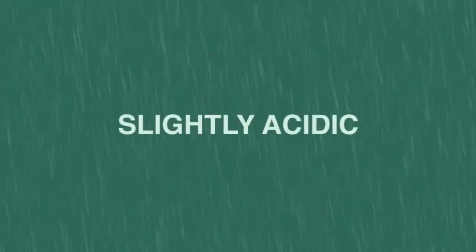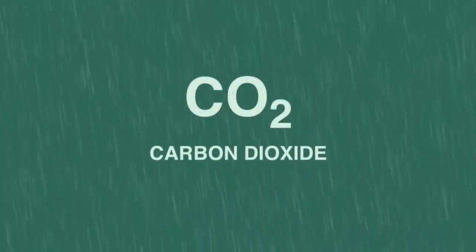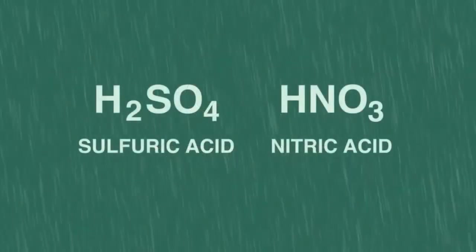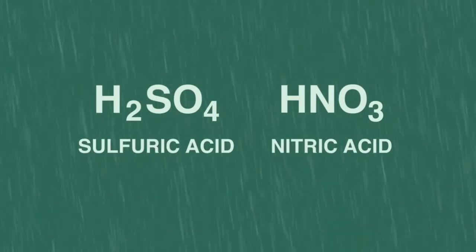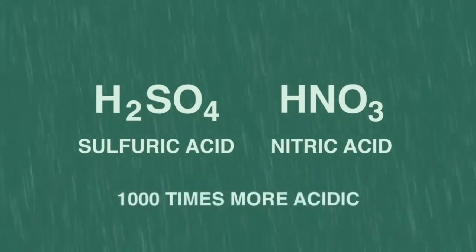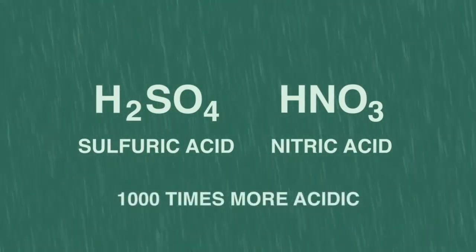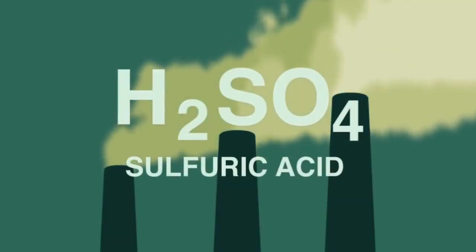So to summarize, normal rain is slightly acidic due to the dissolved carbon dioxide, but acid rain contains sulfuric and nitric acid, making the rain a thousand times more acidic and dangerous for many living things. Sulfuric acid arises from the burning of fossil fuels containing sulfur.